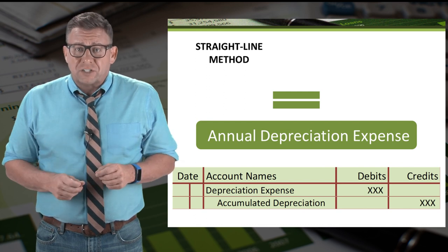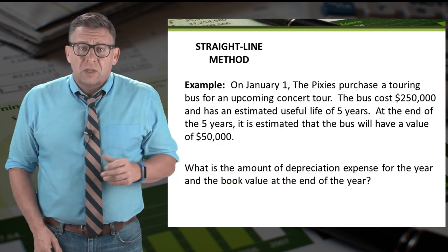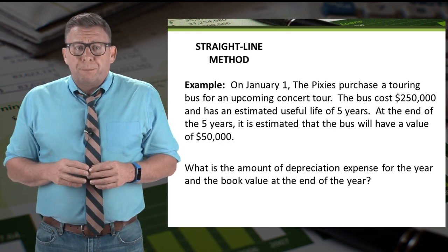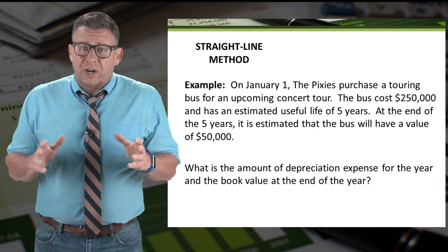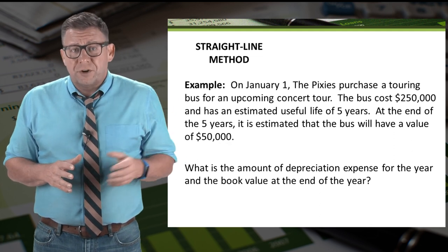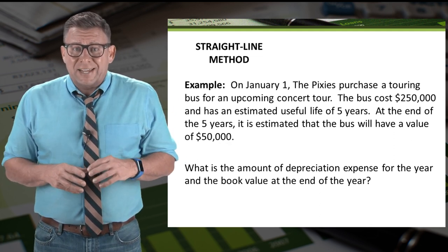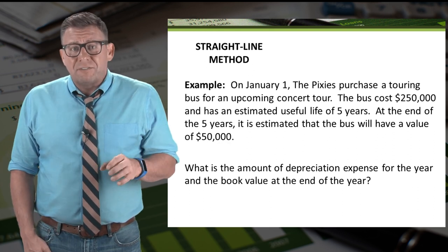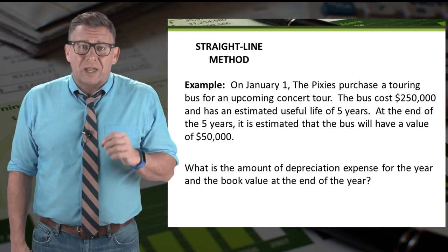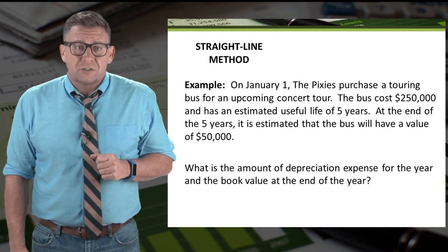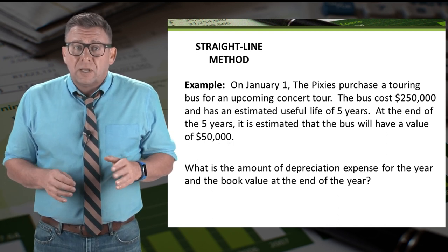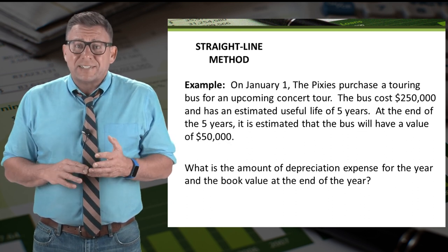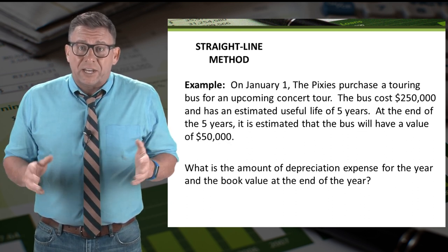We would record that in our adjusting journal entry. So let's look at an example. On January 1, the Pixies purchased a touring bus for an upcoming concert tour. The bus costs $250,000 and has an estimated useful life of five years. At the end of the five years, it's estimated that the bus will have a value of $50,000. Using the straight-line method, let's calculate the amount of depreciation expense and the asset's book value at year end.